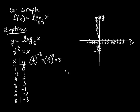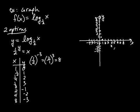Plotting those points: (1, 0), (1/2, 1), (1/4, 2), (1/8, 3), (2, −1), (4, −2), (8, −3). You can see what the curve looks like. Before graphing it, let me show you another way of getting this table of values — and you can use whichever method is easiest for you.